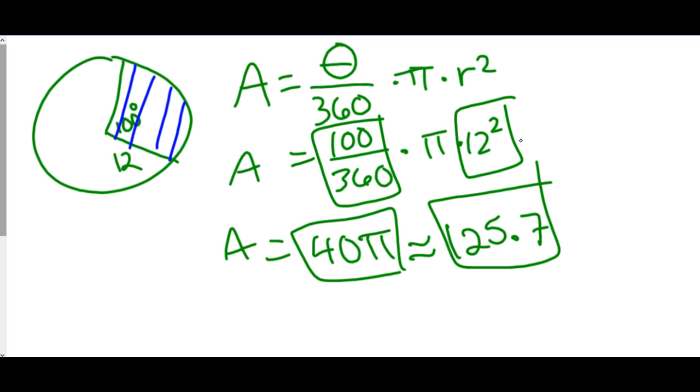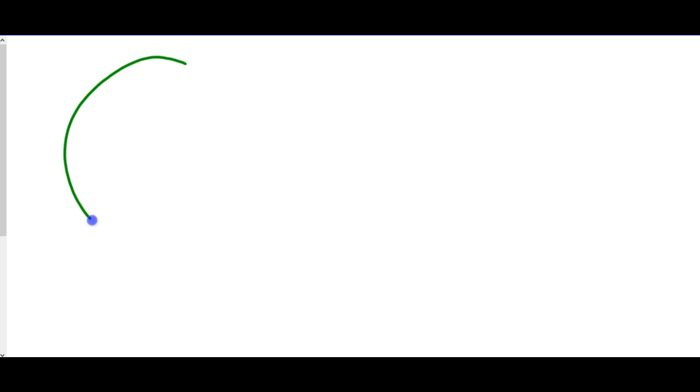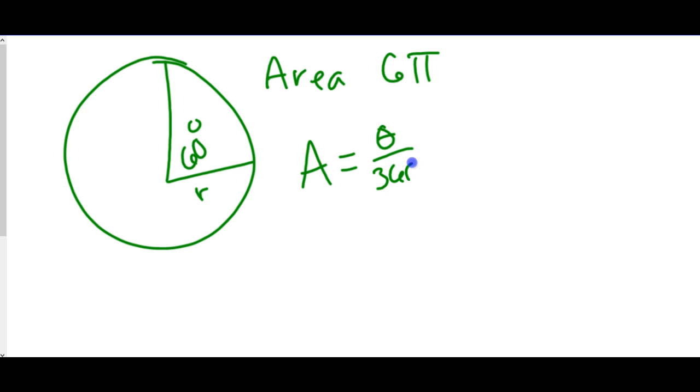So something else they might do, they may give you an area and ask you to find the radius. Let's say the area is 6 pi and we have this picture and we want to find the radius. We know the formula for area of a sector is A equals theta over 360 times pi times radius squared. So we want to plug in everything we know. First, I know the area so I can replace the big A with 6 pi. I know theta because they gave me the angle is 60.